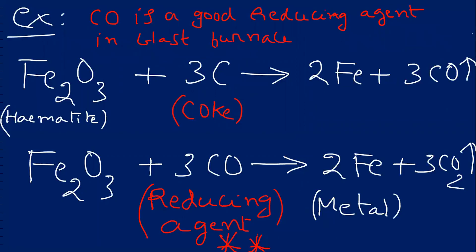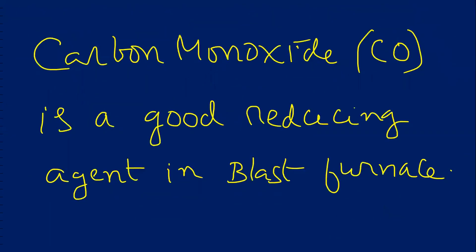The same reaction I am repeating once again. Carbon monoxide is a good reducing agent in the blast furnace. Hematite Fe2O3, when it reacts with coke, it forms iron. The carbon monoxide formed in the first reaction reacts with the leftover Fe2O3 to form iron also. In this process, carbon dioxide escapes out.